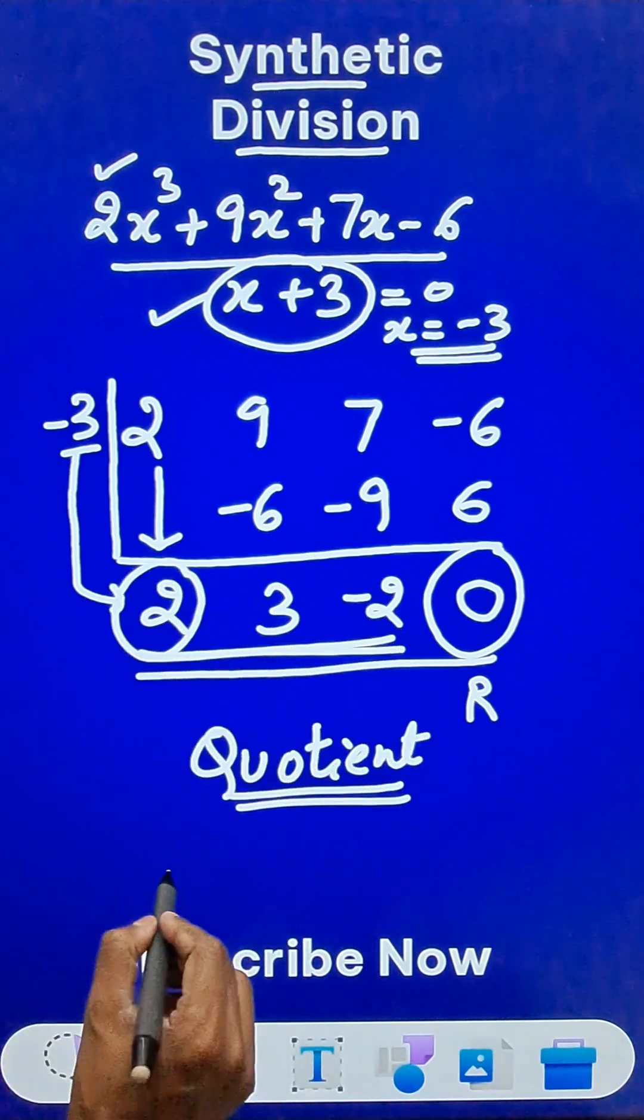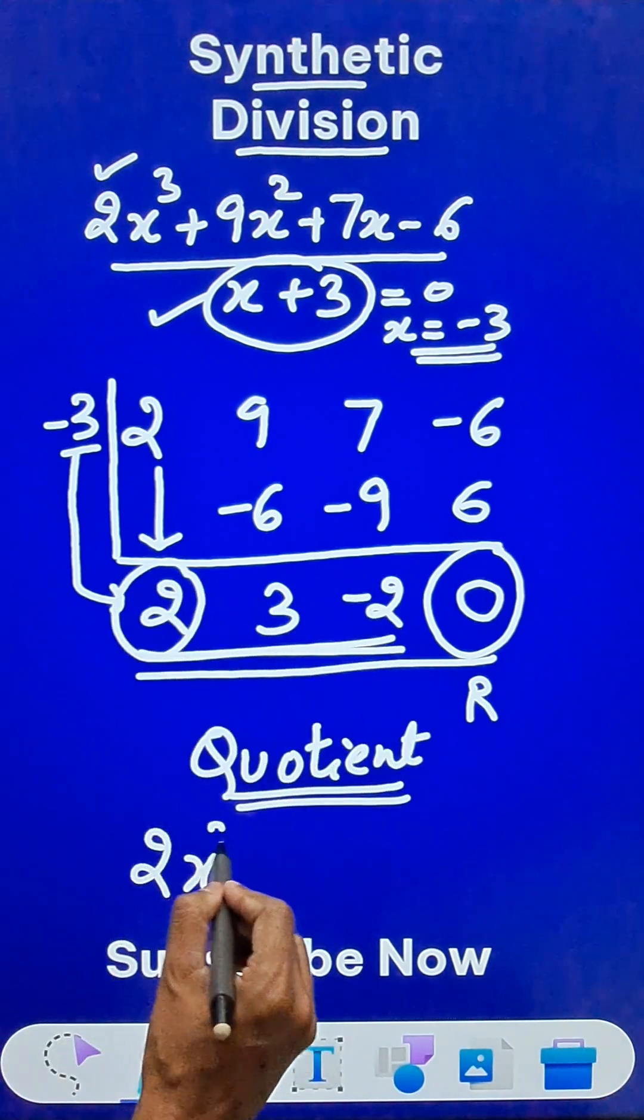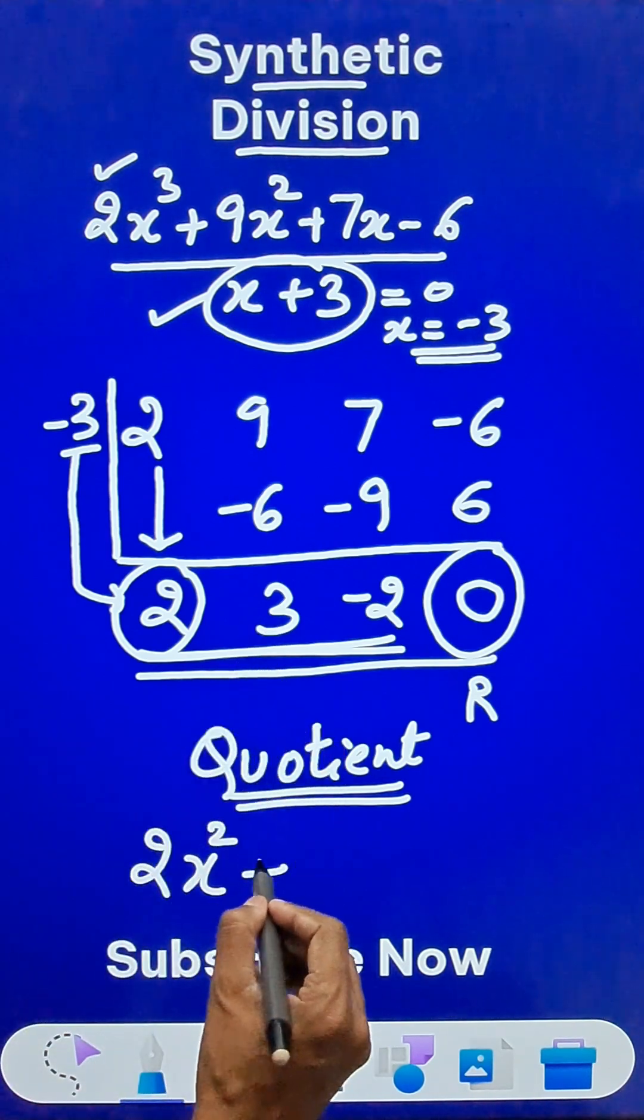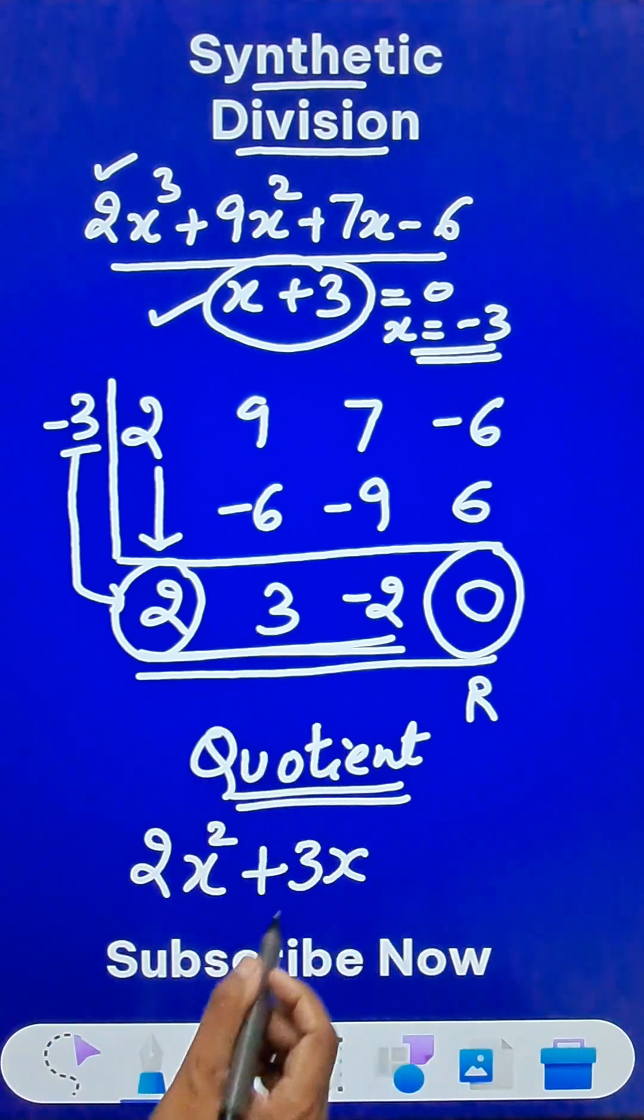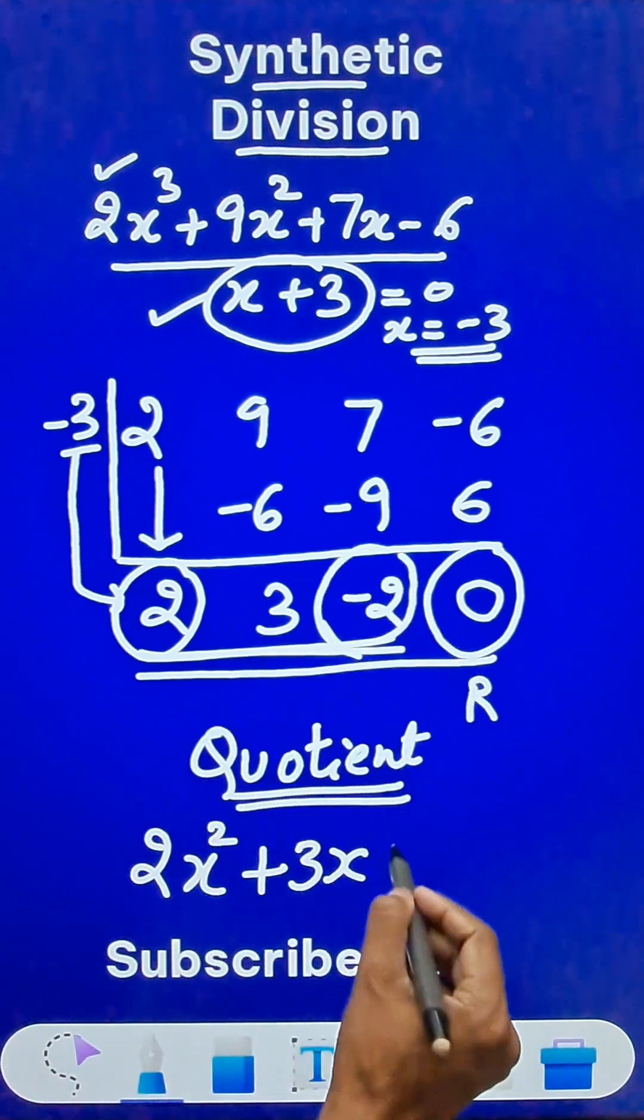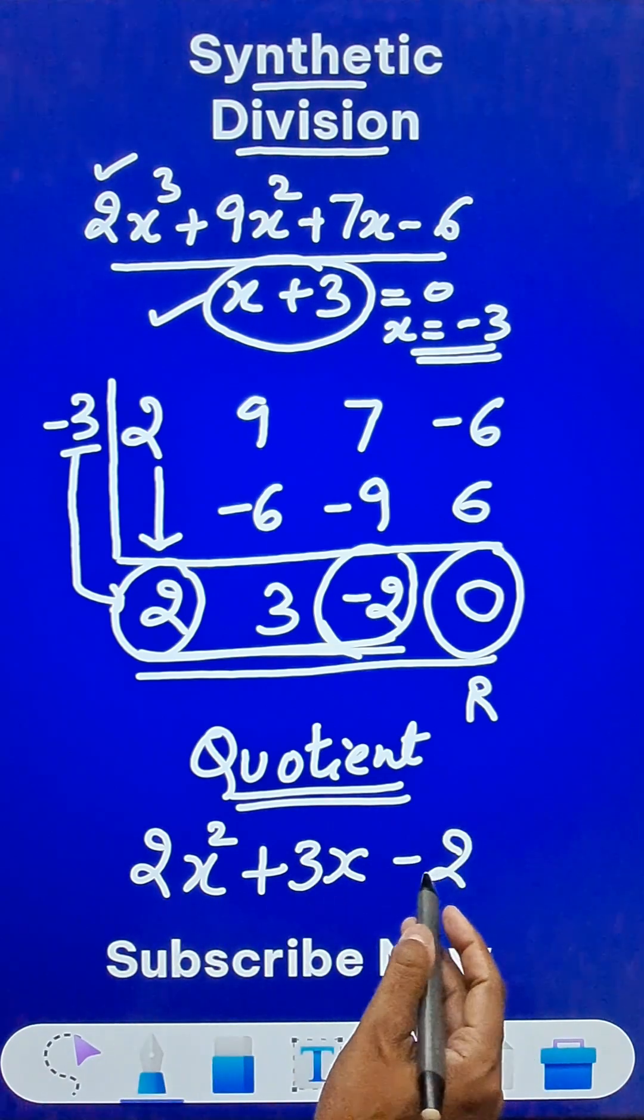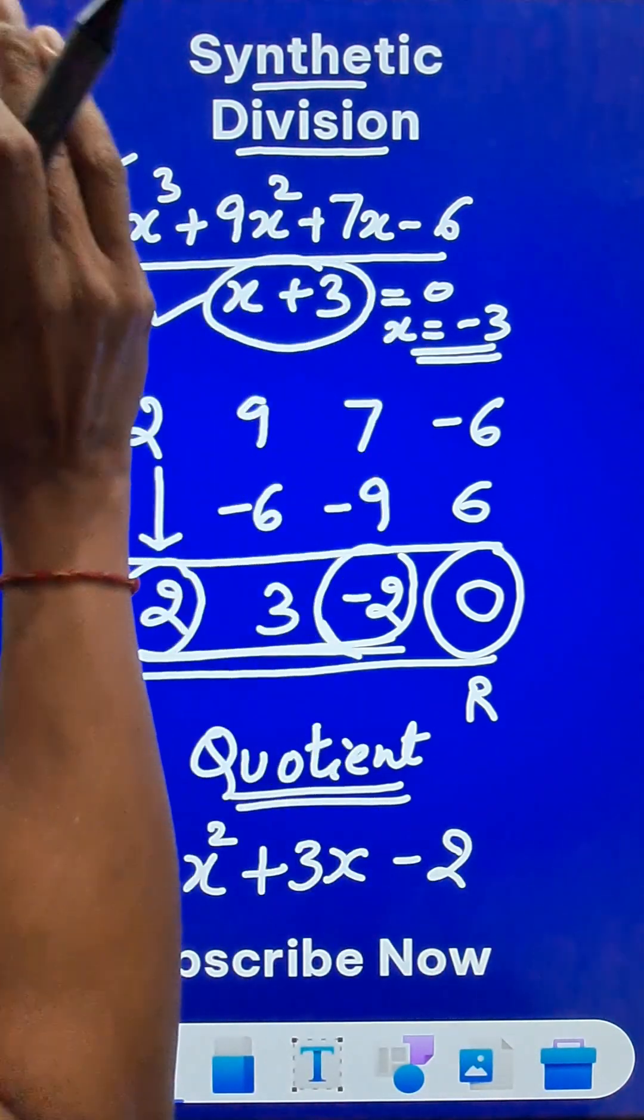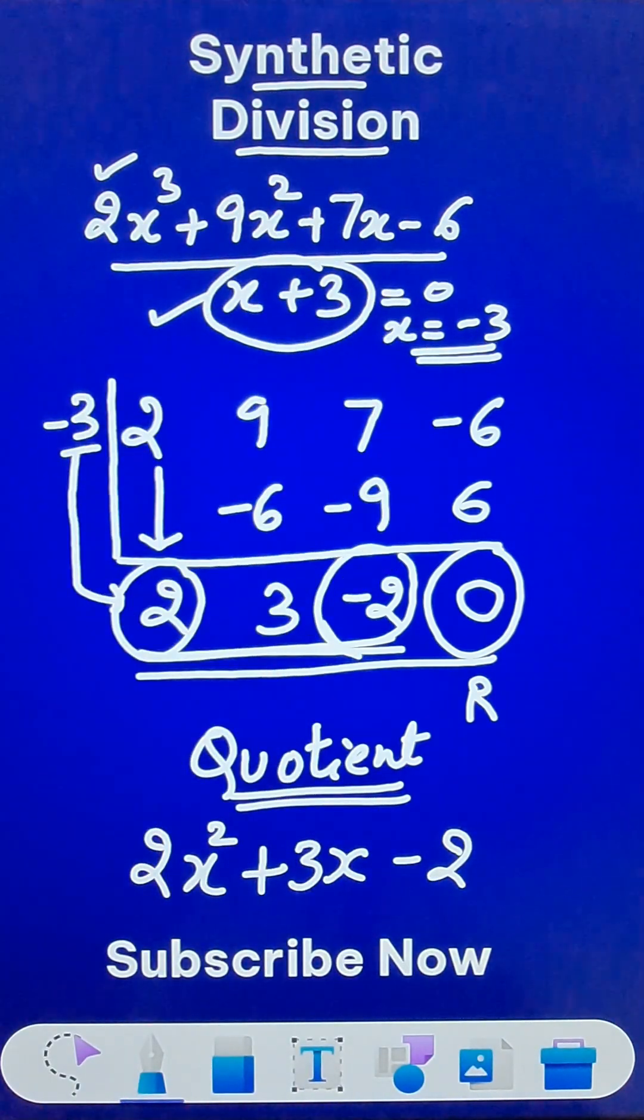So, we will start with this number 2 and then suffix x². Then we write 3, it is +3, right? And suffix x, and finally the -2 becomes the constant term, and this is the quotient of this big problem of division of algebraic polynomials.